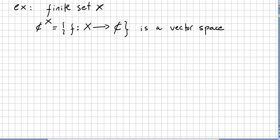X is a finite set, and I'm going to introduce this notation. This means I like to see this as ℓ^X = {f: X → ℂ}, from X to the complex numbers. This equals the set of mappings from X to the complex numbers and this is a vector space.